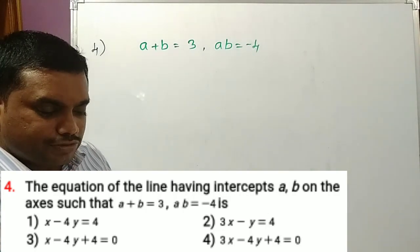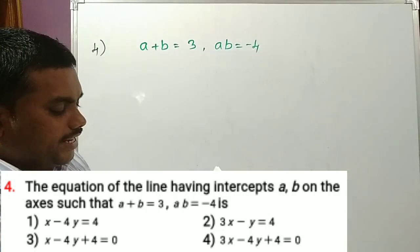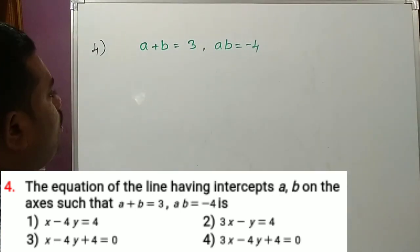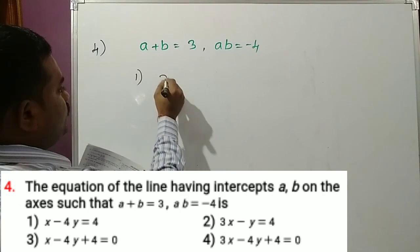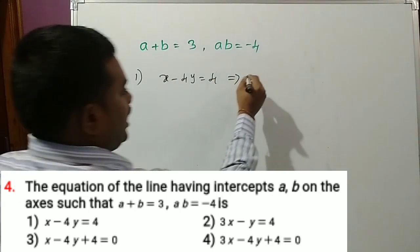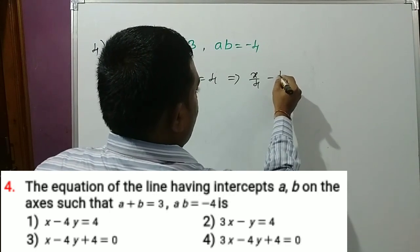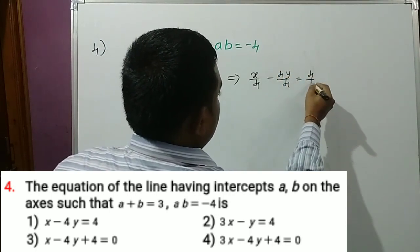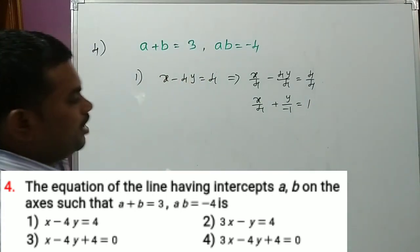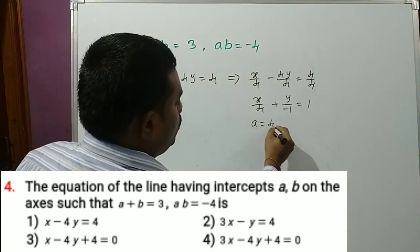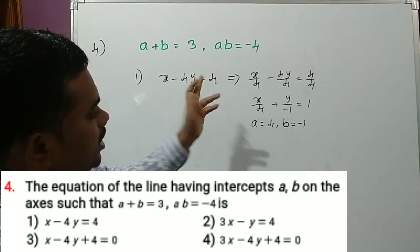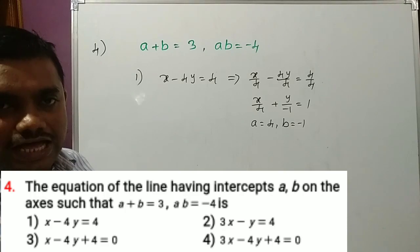Question 4: The equation of the line having intercepts a and b on the axes such that a plus b equals 3 and ab equals minus 4. Converting to intercept form: x minus 4y equals 4 gives x/4 plus y/(minus 1) equals 1, so a equals 4 and b equals minus 1. Verifying: a plus b equals 3 and ab equals minus 4. Both conditions are satisfied, so option 1 is the correct answer.